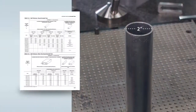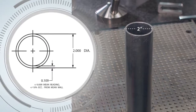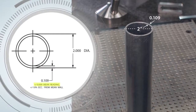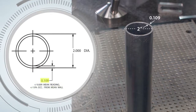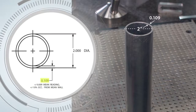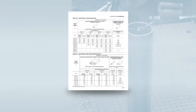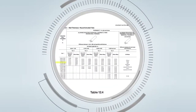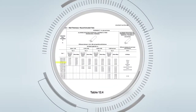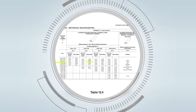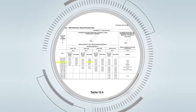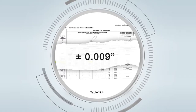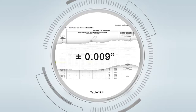Now we'll move on to wall thickness. Two different tolerances also apply to the wall thickness: a mean wall tolerance and wall eccentricity tolerance. This tube has a 0.109 inches specified wall thickness. To find the mean wall tolerance, we'll use table 12.4 and find the corresponding row in column 1, then move over to the right side of column 3, which has the correct diameter range for this tube and applies to a 6000 series alloy. The mean wall tolerance from specified wall is plus or minus 0.009 inches.